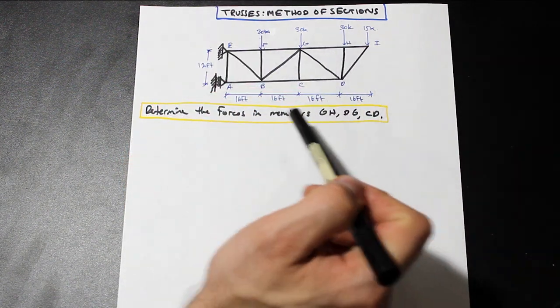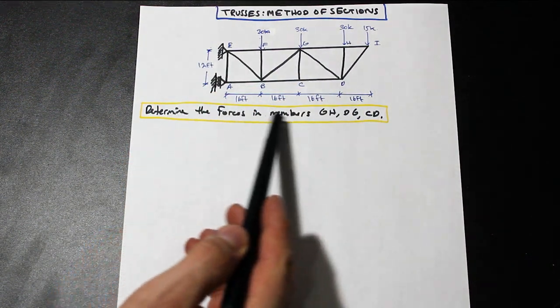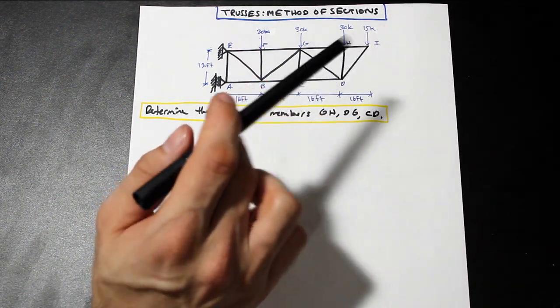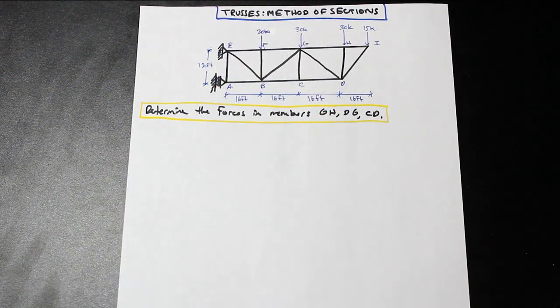You have to find the reactions. And as you can see, the question they're asking is to determine the forces down here at the end. Because it punishes you for not understanding what the method of sections is.